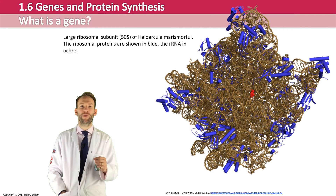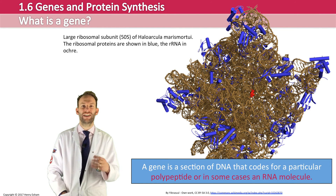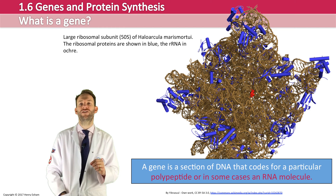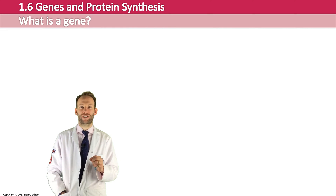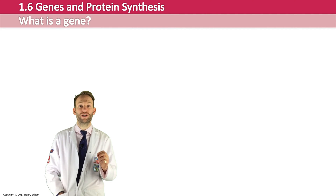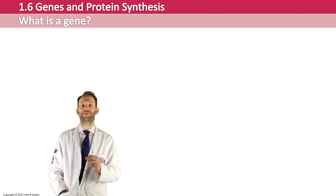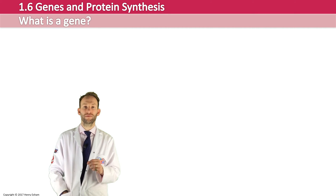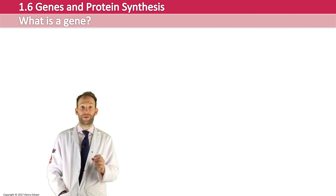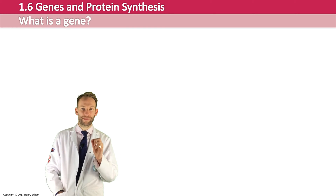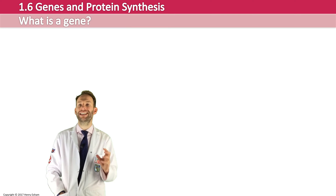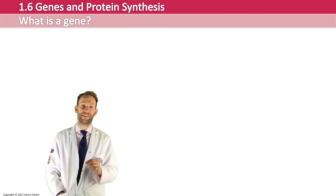Another problem with this definition is the idea that it is one discrete section of DNA that makes up the gene, but it's more complicated than that. A better definition of gene structure would be: an ordered sequence of nucleotides located at a particular locus on a particular chromosome. Now we're getting more detailed, but actually they're not always at one specific locus, so even that isn't a perfect definition.